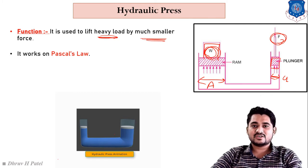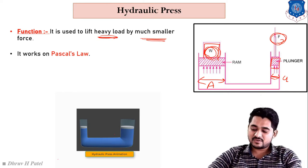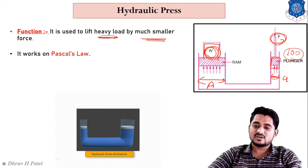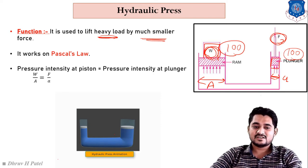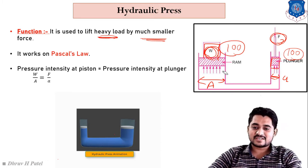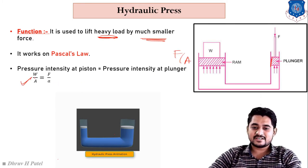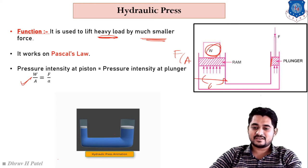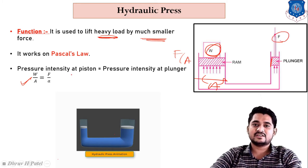The hydraulic press works on Pascal's law, which we studied in the first chapter. For a steady fluid, pressure intensity is the same in all directions. The pressure intensity at the piston equals the pressure intensity at the plunger: W/A = F/a, where W is the load on the larger area A, and F is the force on the smaller area a.